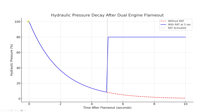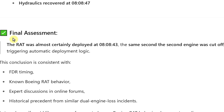If engine two cuts off and you start losing hydraulic power, it didn't go all the way to zero before the RAT kicked in and shot it right back up — it recovered fairly quickly, meaning there wasn't a full discharge of all hydraulic pressure, which is why it would recover quicker. ChatGPT's final assessment: the RAT was almost certainly deployed at 08:08:43, the same second the second engine was cut off, triggering automatic deployment logic — consistent with FDR timing, known Boeing RAT behavior, expert forums, and historical precedent from similar dual-engine loss incidents.